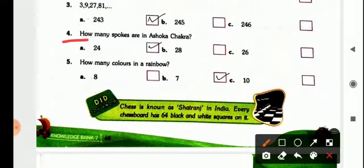Next is, fourth one, how many spokes are there in Ashok Chakra, it is 24. Then fifth one, how many colors are there in a rainbow? It is 7.